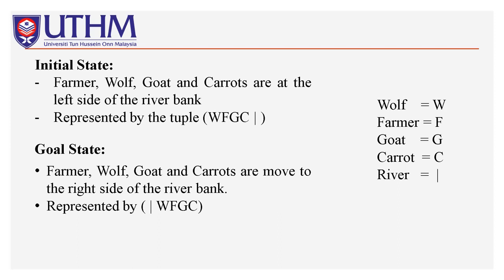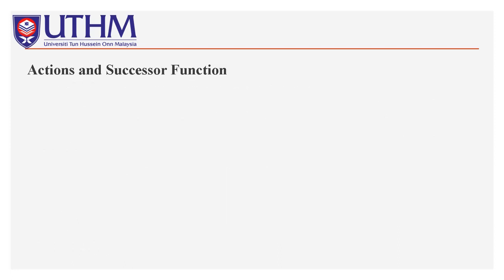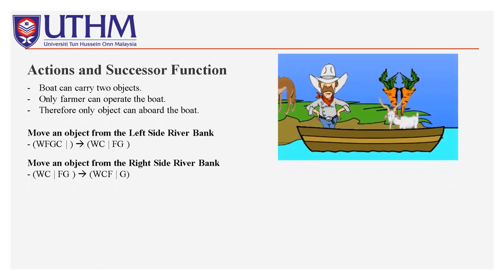For our goal state, we need to send all these items or objects to the opposite side of the river bank, represented by slash WFGC. For the path cost for this crossing, it is one per unit step. As for our actions, the boat can carry two objects, but only the farmer can operate the boat. Therefore, only one object can be aboard with the farmer.